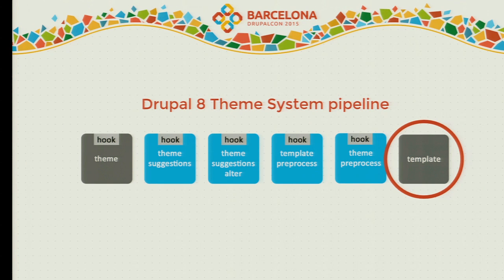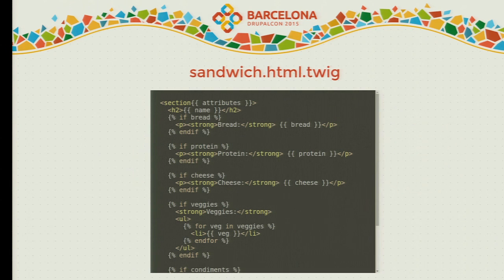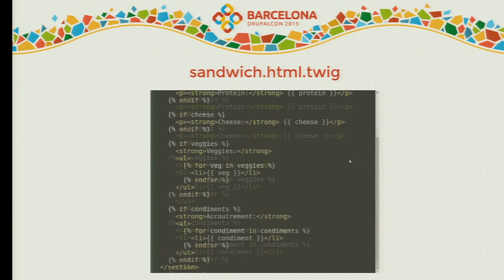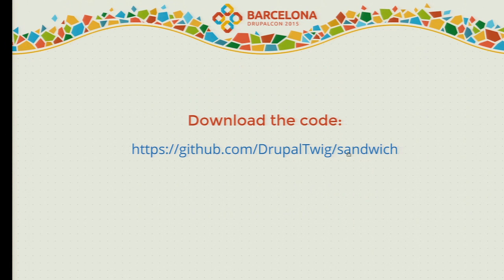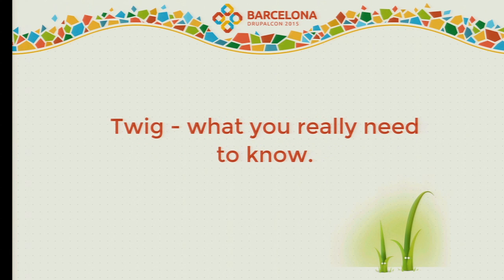After the preprocess functions, we are finally at the template where we can create the markup. That's the whole pipeline of the Drupal 8 Theme System — this is how things are done when they're done the right way. If you want to download the code snippets, they are available in the GitHub repo. There is a fully functional module which hopefully works — Drupal 8 is still changing quite a lot. Last time I tested it was yesterday and it worked.